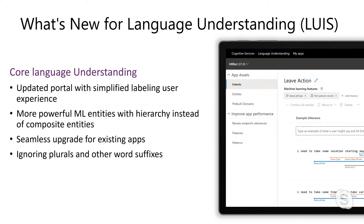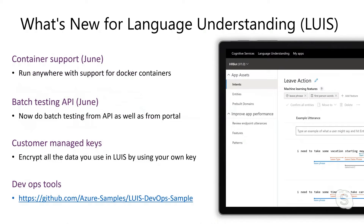In addition to the core language understanding features, we've got some additional stuff we're talking about at Build. Customers have been asking for Docker container support, and this is going GA in June. It enables you to run anywhere and have the flexibility to scale as much as you need without any limitations on TPS when you're hosting the container. Another request we've received is to do batch testing through the API — previously you could only do this in the portal — and this will be live in June as well. We're also making the service more secure, so you can encrypt all the data you use in LUIS using your own key.